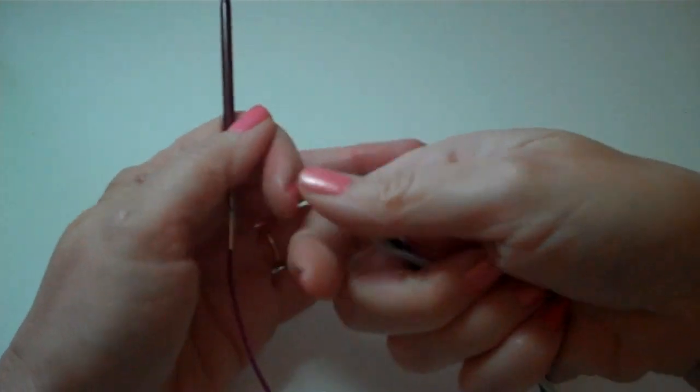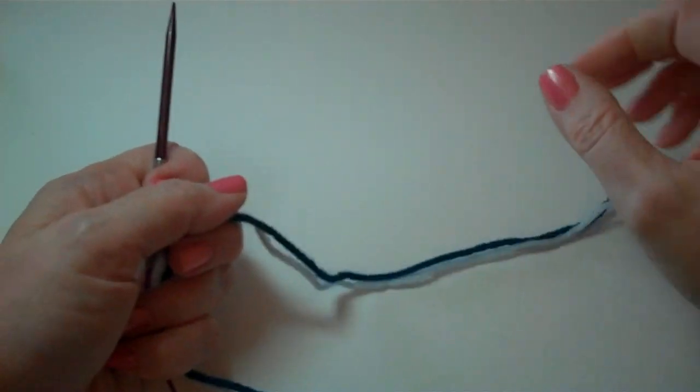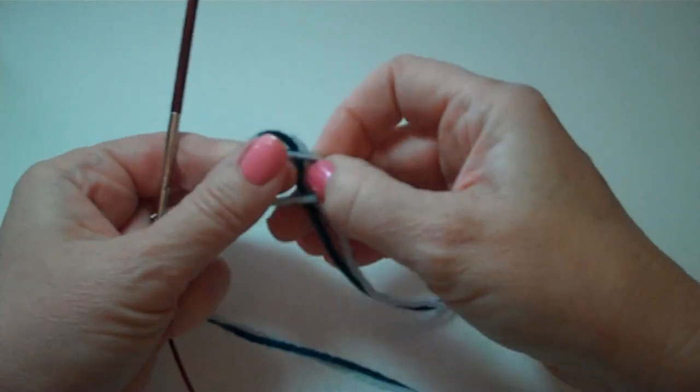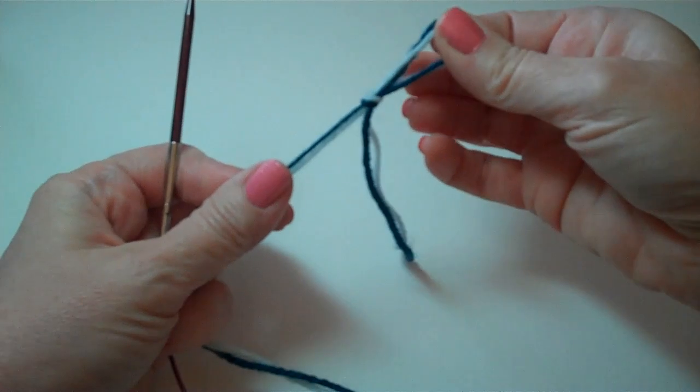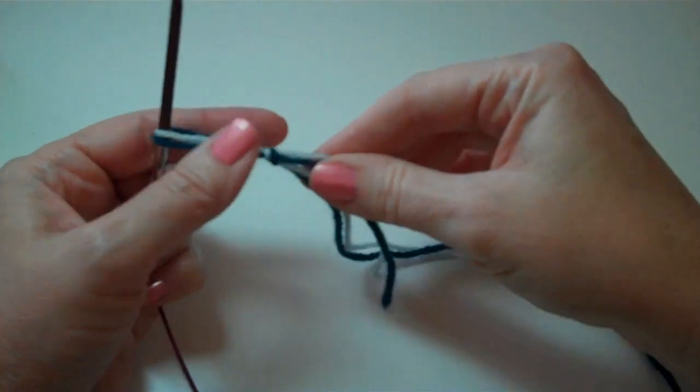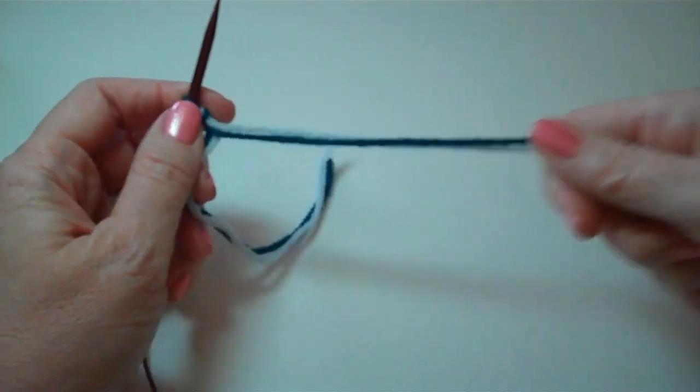To begin with we're going to take both yarns, the two different colored yarns, and we're going to make a slip knot with both of them together. Then we're just going to slip that slip knot up onto the needle and we're ready to go.